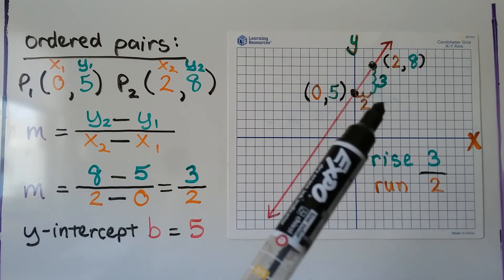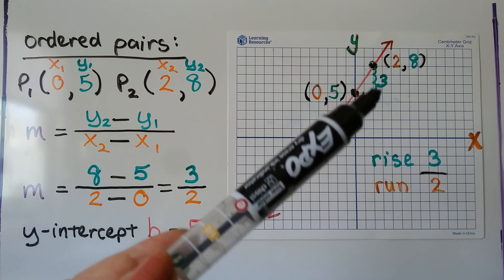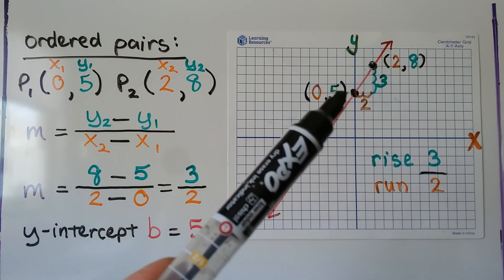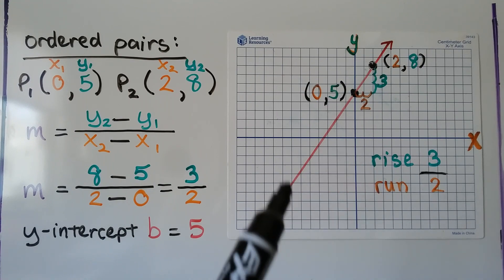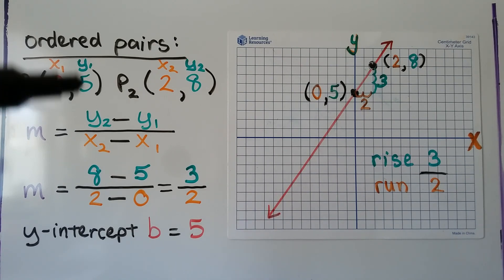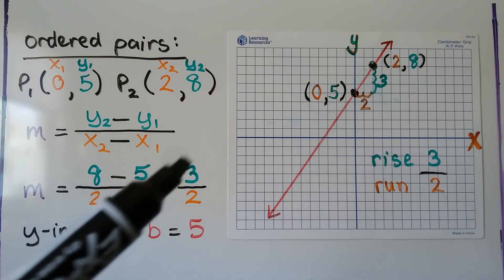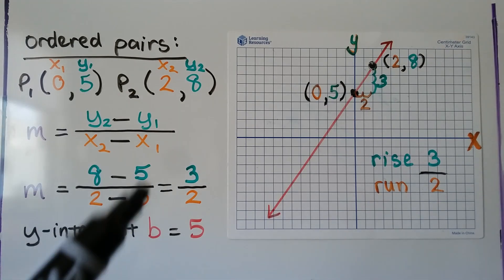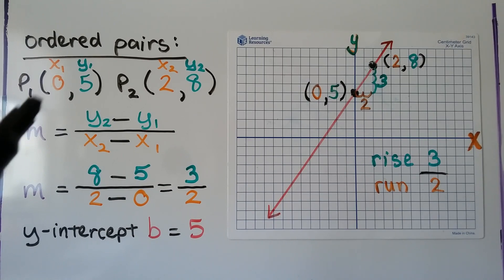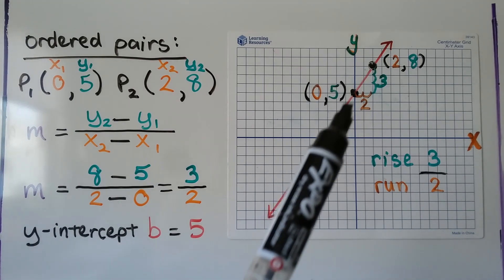The rise is the vertical change and the run is the horizontal change. It's rising three squares — 1, 2, 3 — and the run going horizontally is 1, 2. So we have 3 over 2. We can use the slope formula and find the change in y-values over the change in x-values: 8 minus 5 over 2 minus 0, which gives us 3 over 2, just like we found with the rise and the run. Our y-intercept b is 5.